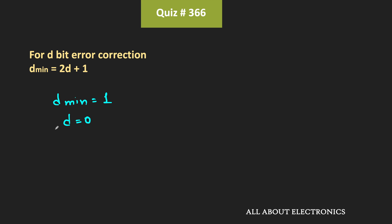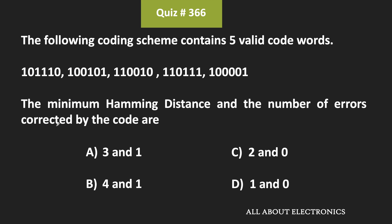In summary, for the given set of code words the minimum Hamming distance is equal to 1, and this code cannot correct any error. The number of errors corrected by the given code is equal to 0, so d = 0 is the correct answer.